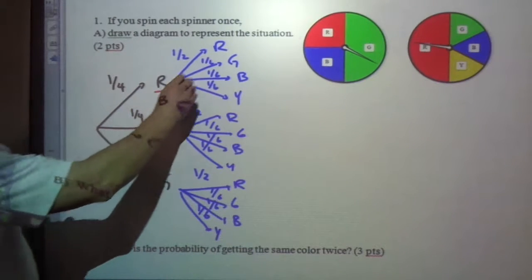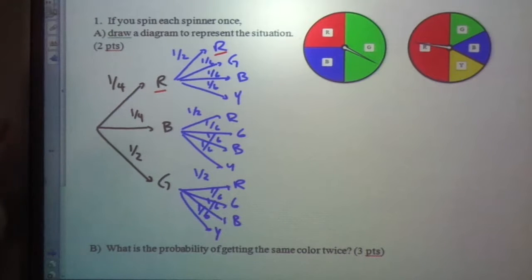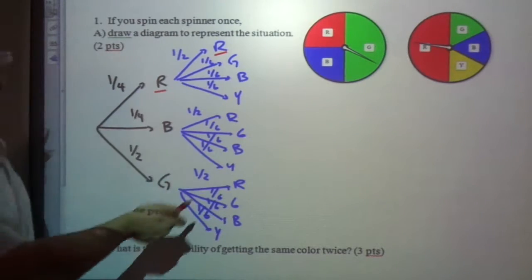You could do red and red, and if you want both two things to happen, you always need to do what to the numbers? Multiply the numbers. Great. So one-fourth times one-half.